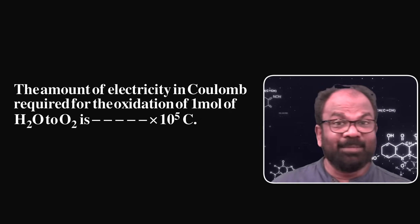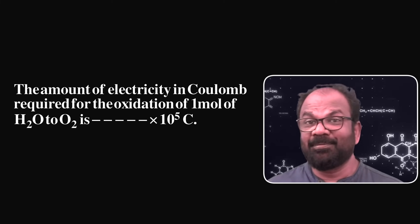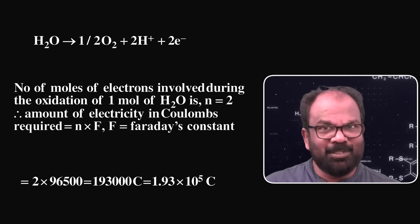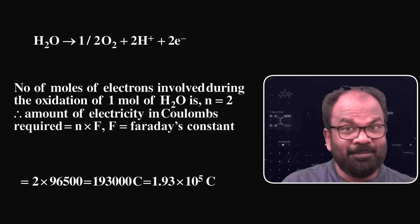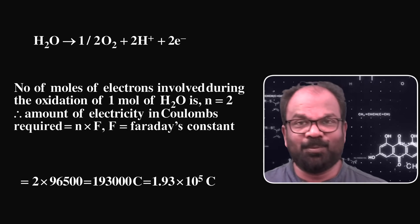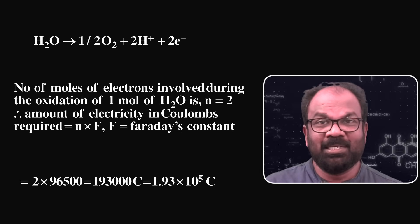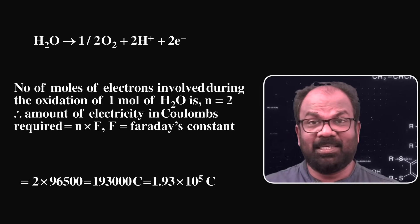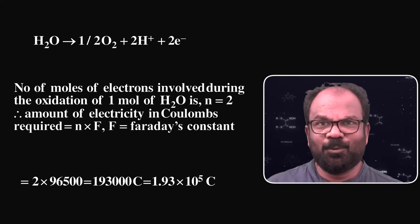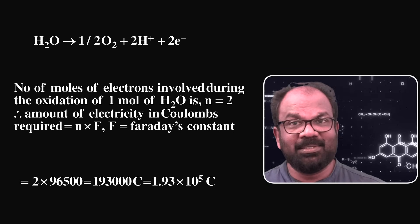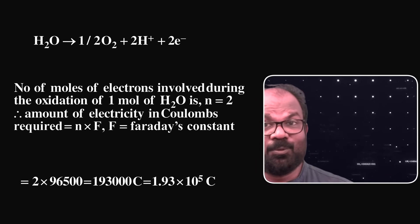Question number 4: The amount of electricity in coulombs required for the oxidation of 1 mol of H₂O to O₂ is dash × 10⁵ coulombs. The equation for oxidation of 1 mol of H₂O is: H₂O → ½ O₂ + 2H⁺ + 2e⁻. So 2 mols of electrons are involved. Quantity of electricity = n × F = 2 × 96500 = 193000 coulombs = 1.93 × 10⁵ ≈ 2 × 10⁵ coulombs.